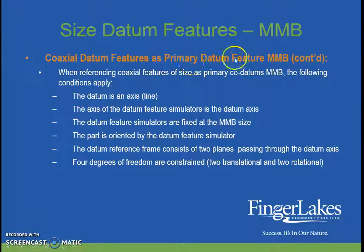Coaxial datum features as primary — summary: the datum is an axis line. The axis of the datum feature simulators is the datum axis. Datum feature simulators are fixed at MMB size. The part is oriented by the datum feature simulator. The datum reference frame consists of two planes passing through the datum axis, and four degrees of freedom are constrained: two translational, two rotational.